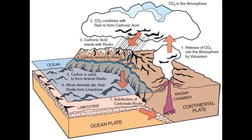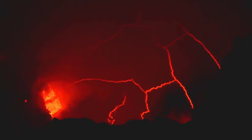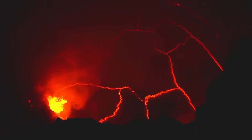Over periods of tens to hundreds of millions of years, carbon dioxide concentrations in the atmosphere are influenced by tectonic processes. As discussed previously, carbon is removed from the atmosphere by weathering and trapped at the bottom of the ocean as sedimentary rocks, before eventually being released into the atmosphere by volcanic eruptions due to plate tectonics. There are periods when a lot of volcanic eruptions and lava flows occur, causing CO2 concentration to increase.